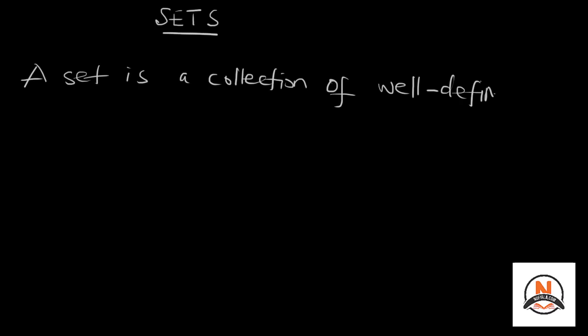A set is a collection of well-defined objects. When we say a collection of well-defined objects, the set should be clearly described so that we'll know if an object is part of the set or not. For instance, if I have a box and I tell you it contains my shirt, then you won't expect to see my keys in that box. If I say that this bag contains my shoes, you won't expect to see food items in that bag, because food items are not shoes.